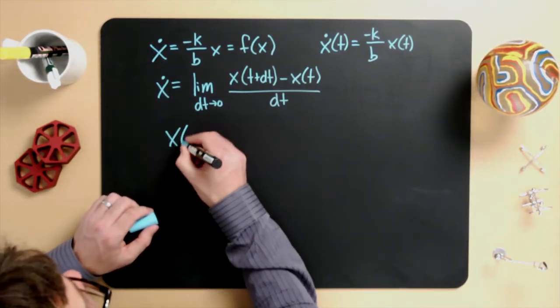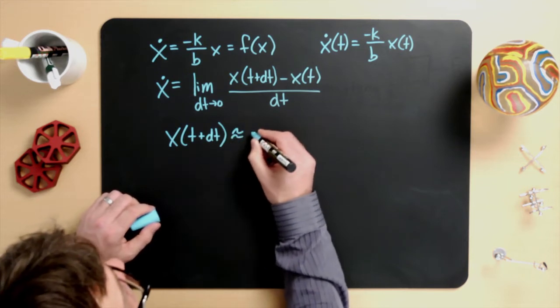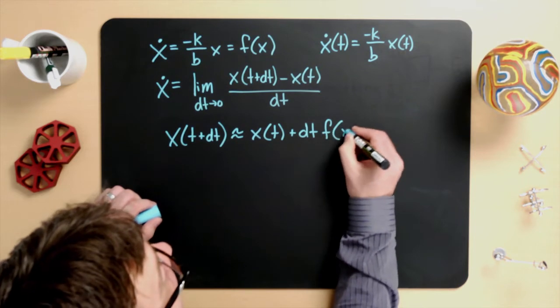So far, I haven't changed anything. This is still a differential equation, and it is still equal to f of x of t. However, if I do not take the limit and instead simply say that dt is some rather small number, we get an expression that only approximates x-dot and is therefore approximately equal to f of x of t. If I rearrange this approximate equation, I get that x of t plus dt is approximately equal to x of t plus dt times f of x of t.